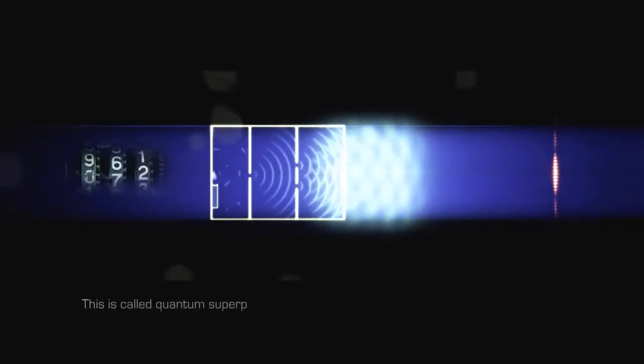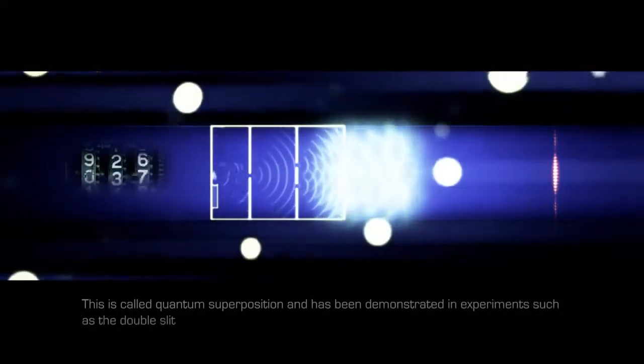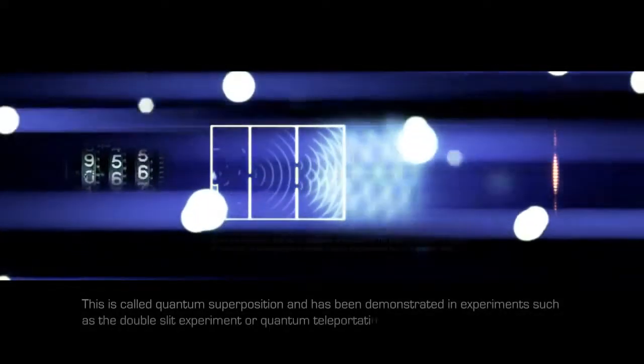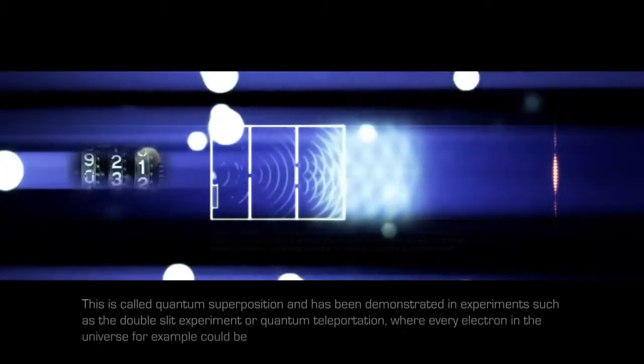This is called quantum superposition and has been demonstrated in experiments such as the double slit experiment or quantum teleportation, where every electron in the universe, for example, could be the exact same one.